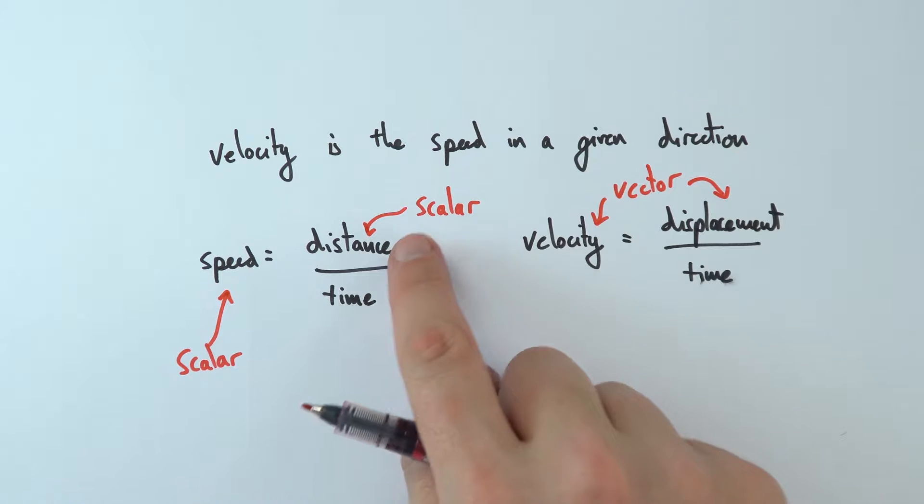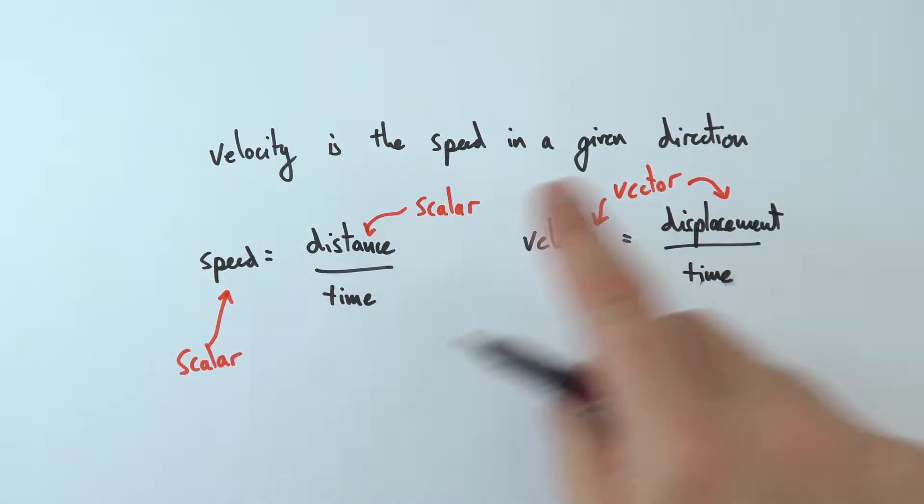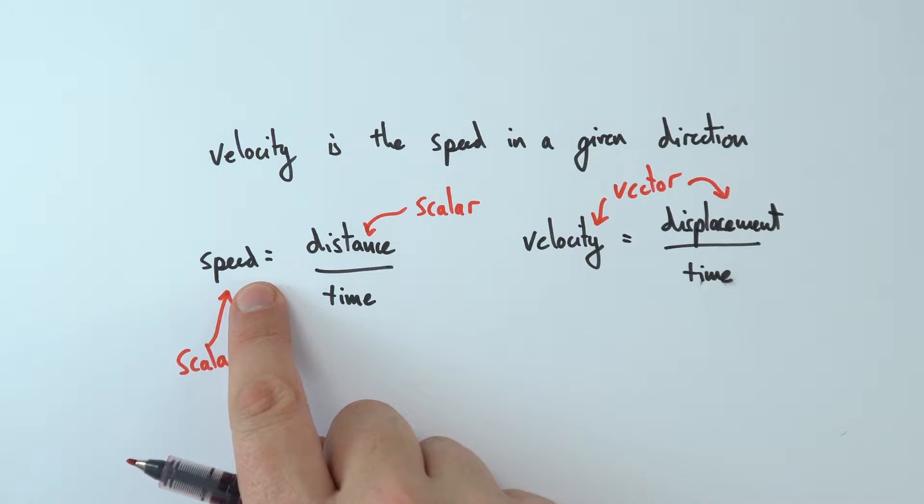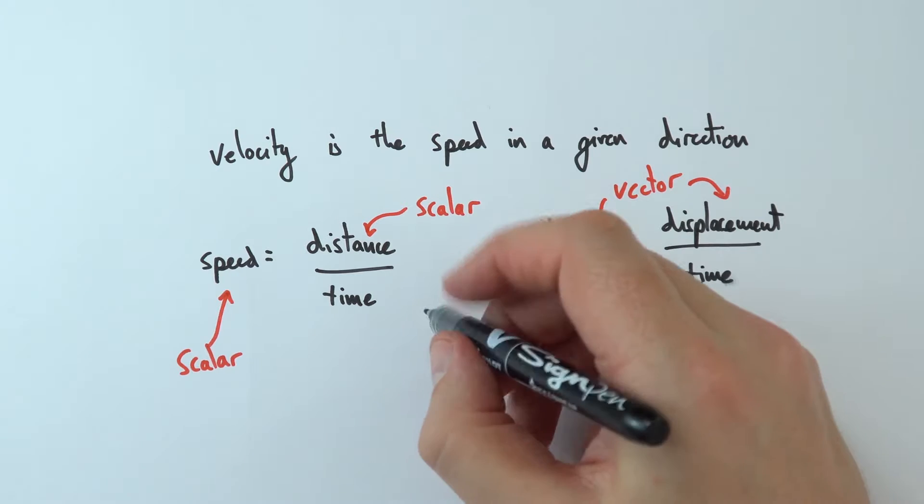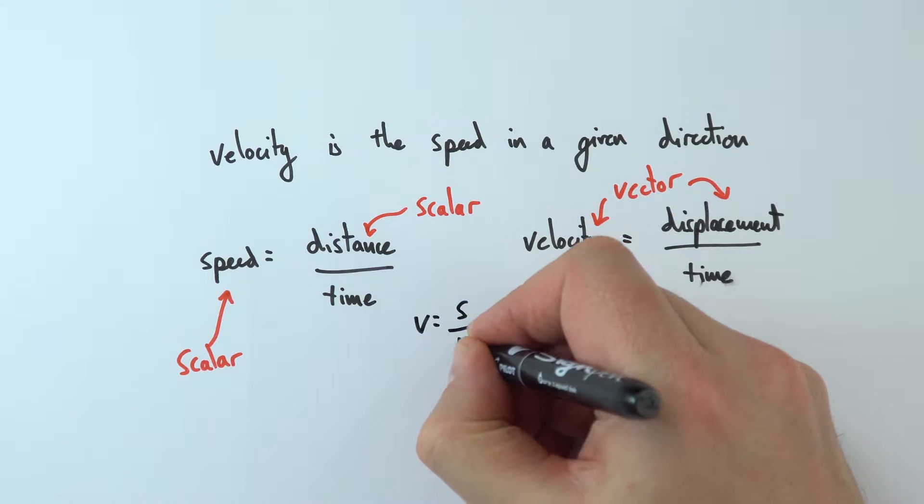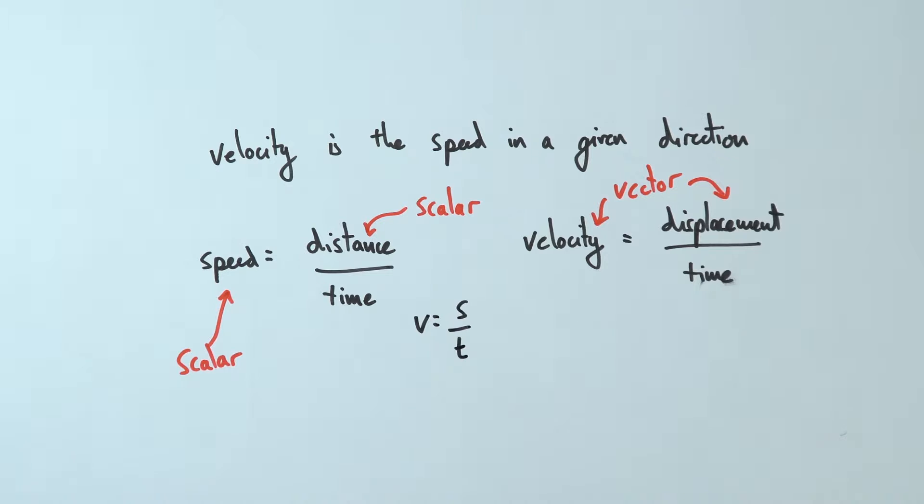But apart from that, we still measure distance in meters and displacement in meters. We measure speed in meters per second and velocity in meters per second. And in actual fact, often we use the same symbol equation for both of them, saying that V is equal to S divided by T. Especially at GCSE, we don't really make that distinction.